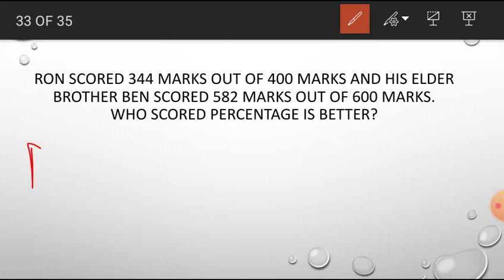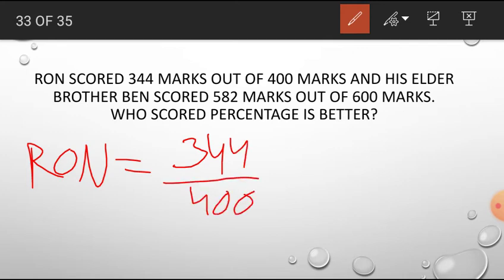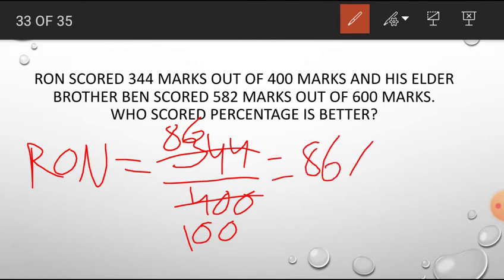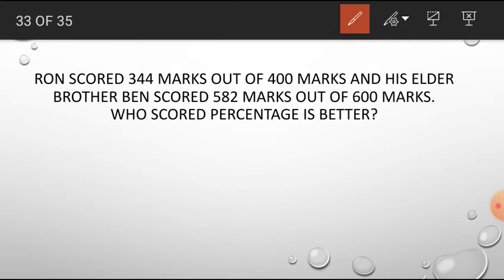So Ron, first we will calculate Ron marks. That is, he got 344 marks out of 400, right? So in 4 table, 8 times 32 and 6 times 24. 86 by 100, that is he got 86%. See here, 86 per 100, so we can easily convert it like 86%. And Ron got 86%.